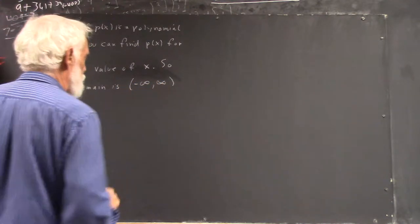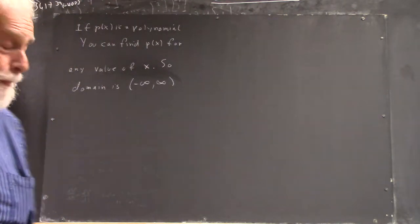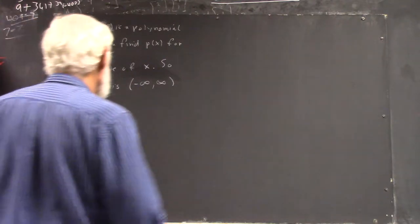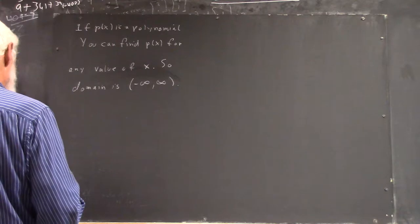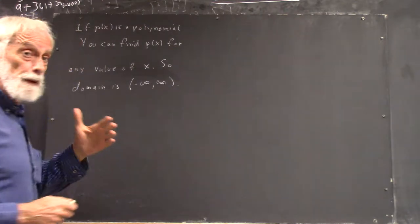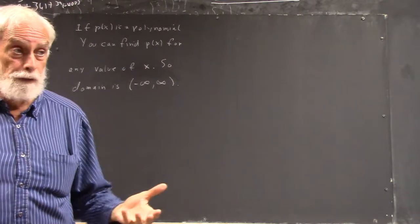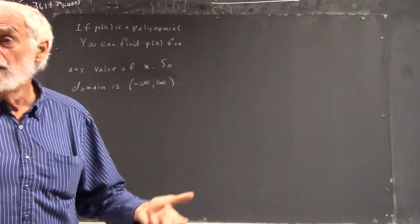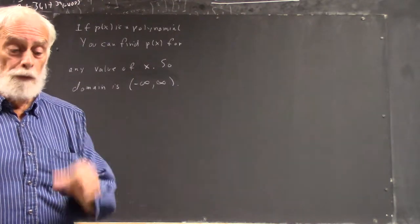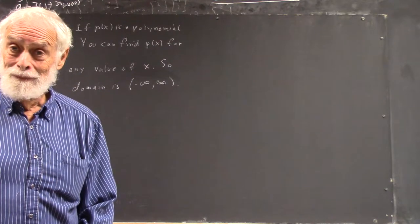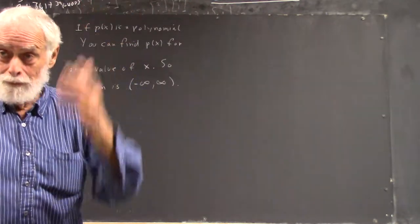So the domain of any polynomial is negative infinity to infinity. The range might not be negative infinity to infinity. Like the range of a quadratic is not negative infinity to infinity. Quadratic expressions are polynomials. So you either go from the vertex up or from the vertex down. So your range, your values of y, you're either from here up or from here down.